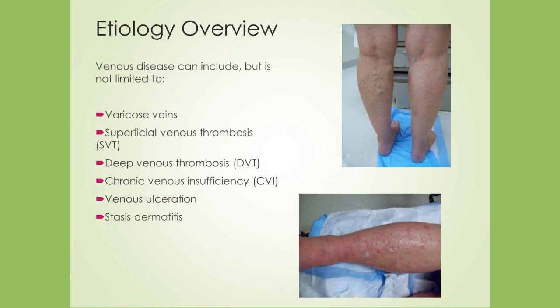Venous disease can include, but is not limited to, varicose veins, superficial venous thrombosis, deep venous thrombosis, chronic venous insufficiency, venous ulceration, and stasis dermatitis. Venous disease can occur in the upper and lower extremities as well as in the head, neck, thoracic, and abdominal veins. For our discussion today, we will primarily be looking at the lower extremities and chronic venous insufficiency.